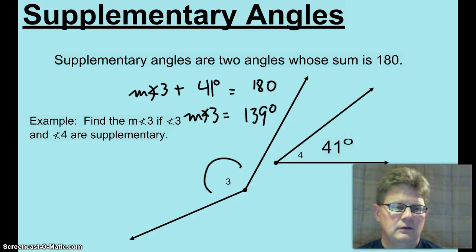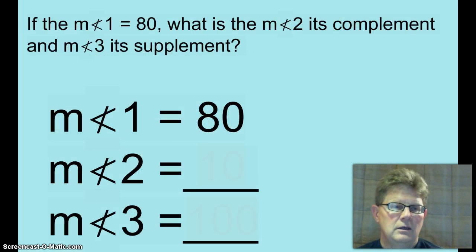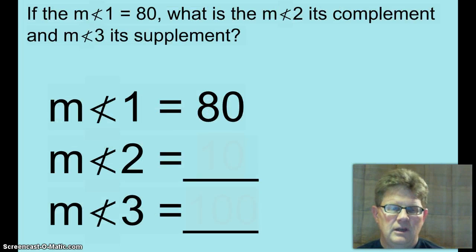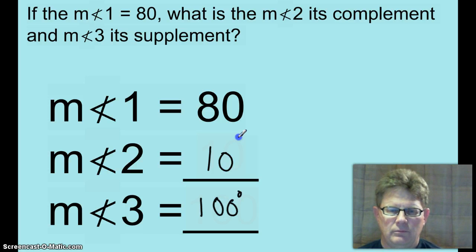All right, let's do that. Okay, next example. If the measure of angle 1 is 80 degrees, what is the measure of angle 2, its complement? Well, that would be 10. And what is the measure of its supplement? 100 degrees, right? All right, moving right along.